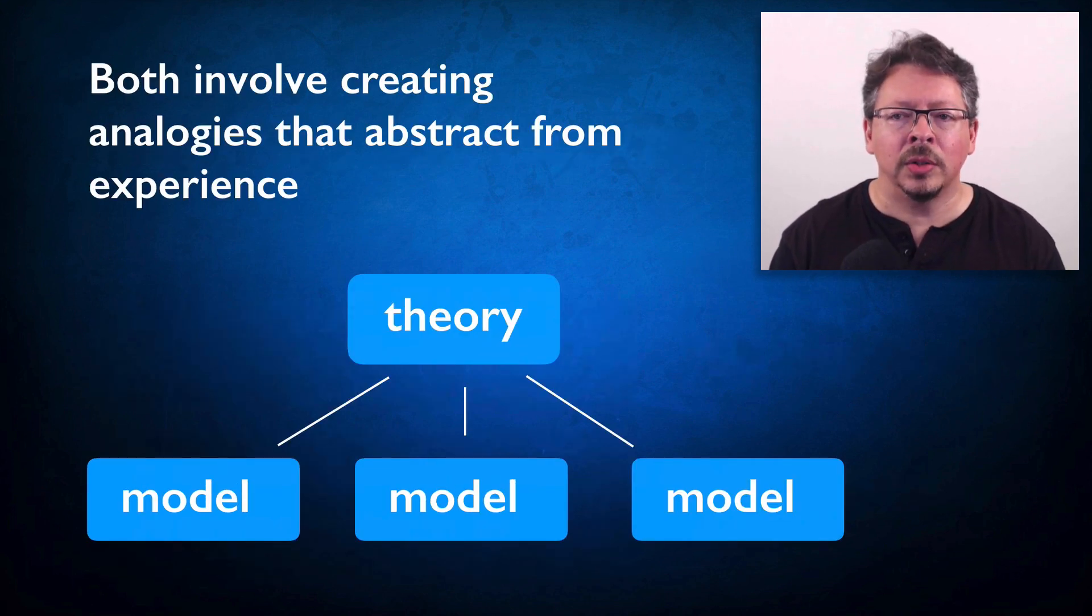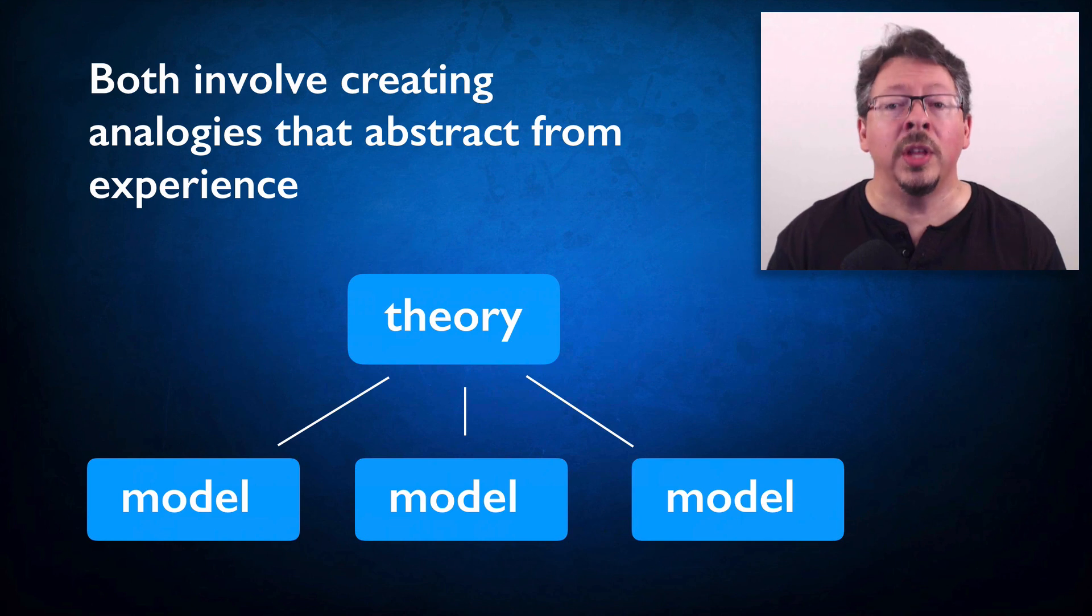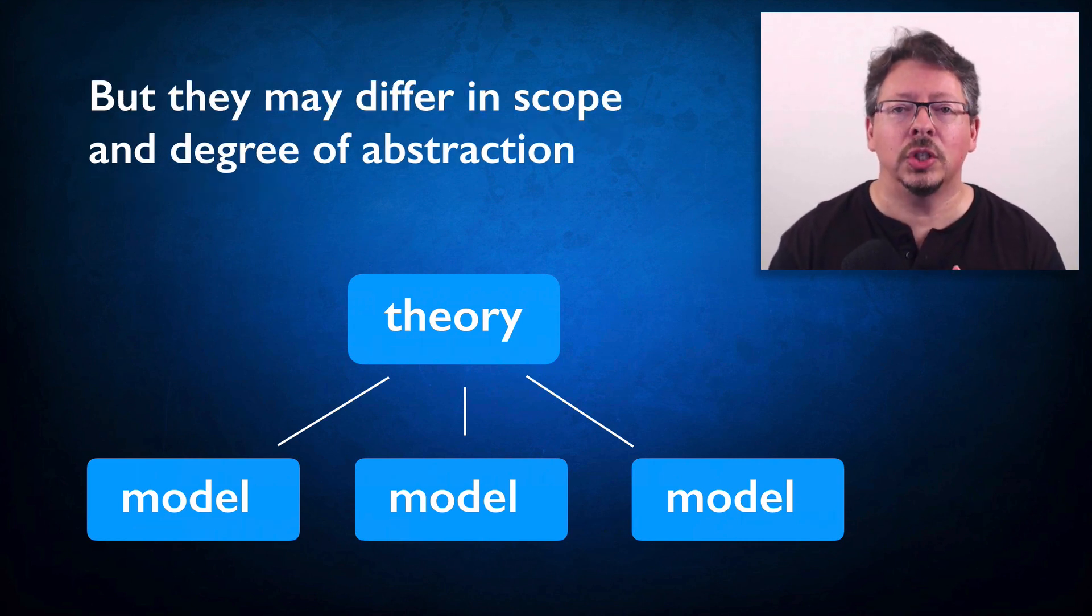So theories and models are similar in the role they play in our reasoning about the world, in the sense that they both involve creating analogies that abstract from experience. But they may differ in scope and specificity, and in the degree of abstraction. We're more likely to call something a model if it's narrower and more specific in its domain of application.